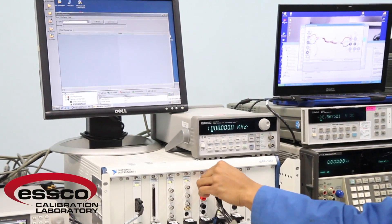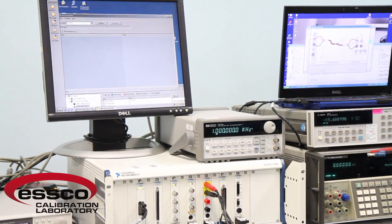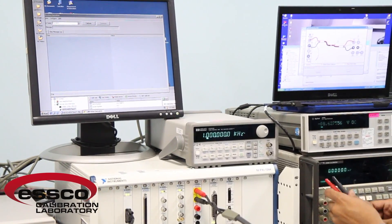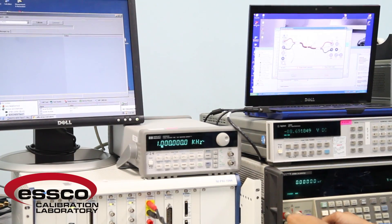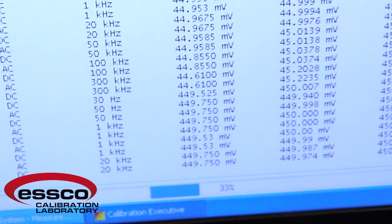Once the technician identifies the model number for the unit being calibrated, the software will prompt the technician with a list of acceptable standards and the proper way to connect the instrument. The software then executes the proper program, controlling both the unit under test and the standard being used.